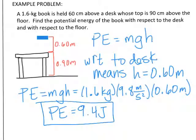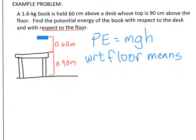Using PE = mgh with respect to the desk, you should get a potential energy of approximately 9.4 joules. Now for the second part of the problem — with respect to the floor — we look at the total vertical displacement from the floor all the way up to where the book is. With respect to the floor, we have a total height of 1.5 meters.